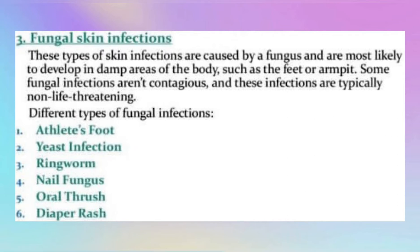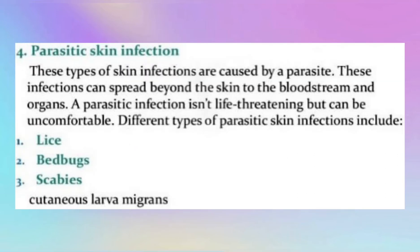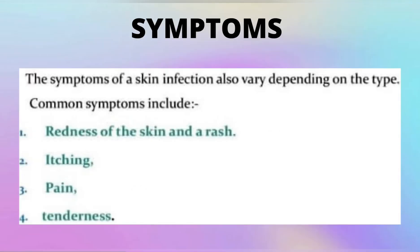The fourth type is parasitic skin infection. These types of skin infections are caused by a parasite. These infections can spread beyond the skin to the bloodstream and organs. A parasitic infection isn't life-threatening but can be uncomfortable. Different types of parasitic skin infections include lice, bed bugs, scabies, and cutaneous larva migrans.